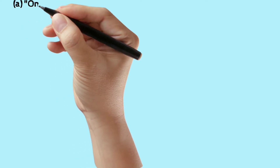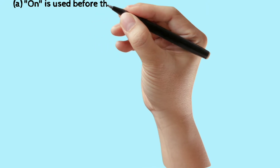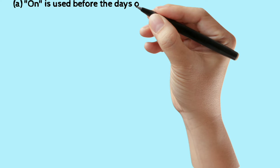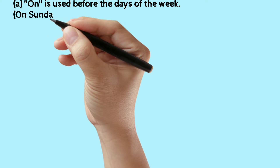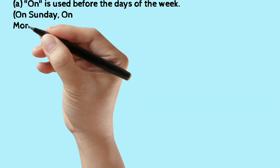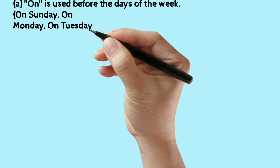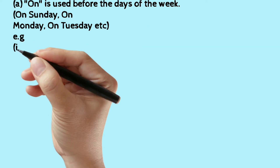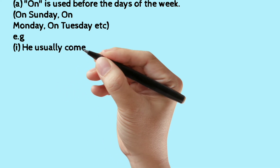Beauty is in the eye of the beholder, my lovable students. How can we brush up our knowledge? Take a glance at this grammatical point: how to use 'on.' On is used before the days of the week — on Sunday, on Monday, on Tuesday, etc. Example: Gracia usually comes on Sunday.